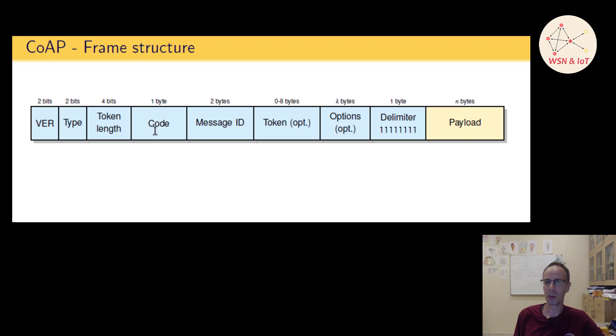Afterwards there's followed one byte with a status code—I will come to this in one minute. Then followed with two bytes for a message ID. The message ID is just a unique ID, a counter which is always counted up when we send a CoAP frame. It's for example to identify duplicated messages. Then it's followed from zero to eight bytes for the token.